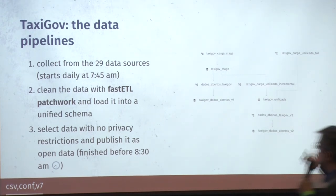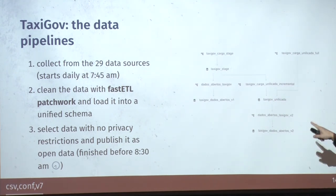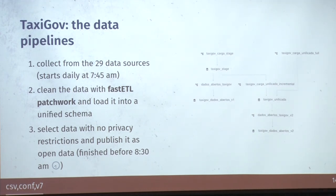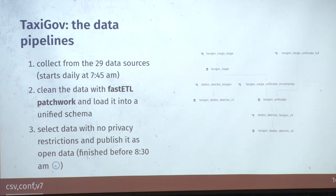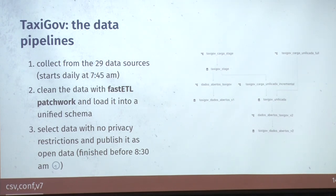This is the schematic that Airflow generates of the whole pipeline — each process is called a DAG, a directed acyclic graph, for processes that extract, transform, and load data. It starts daily at 7:45 a.m., then cleans the data with the FastETL patchwork — a collection of cleaning processes for each specific field, including geographic coordinates and CPF, which is the number identifying Brazilian citizens. The data with no privacy restrictions is then published as open data, and this whole process is finished before 8:30 a.m. every day.